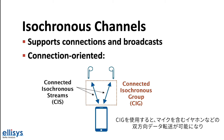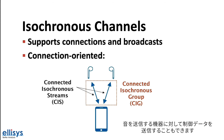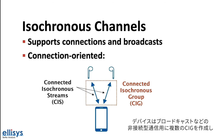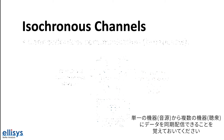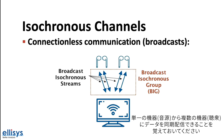CIGs allow bi-directional data transfer, such as in earbuds that contain microphones and for sending control data to the source device. Note that a device may create multiple connected isochronous groups. For connectionless communication, such as broadcasts, a group of synchronized streams may be used to stream data from a single source to multiple sinks.